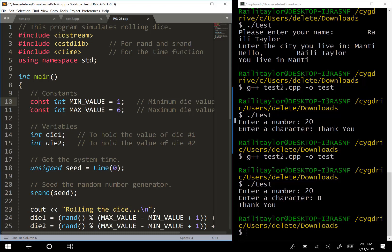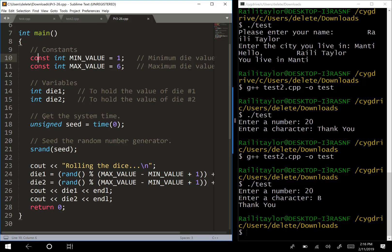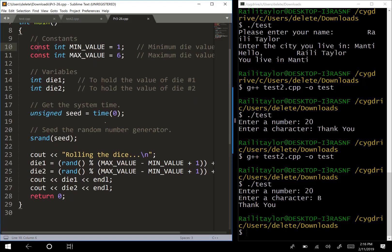So we set the values 1 to 6 because we can get the minimum value for a dice as 1, maximum value as 6, and then we set two variables that are die 1 and die 2. Then we're going to get the clock time to seed our random number generator, and then we seed the random number generator with this SRand, and then see out rolling the dice, generate our random numbers for die 1 and die 2, and then we're just going to see out what those numbers are.